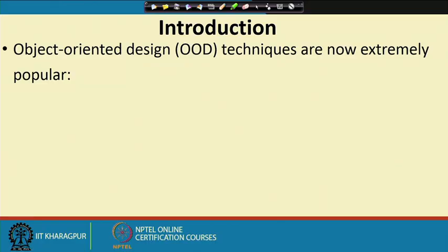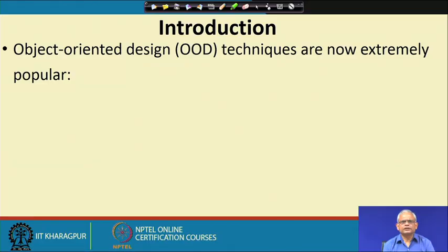Let us see how to carry out object oriented design. We have discussed about procedural design and now we look at the nitty gritty of object oriented design. For object oriented design we will use UML as the notation. Nowadays object oriented design techniques have become extremely popular and are used extensively.